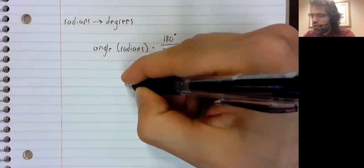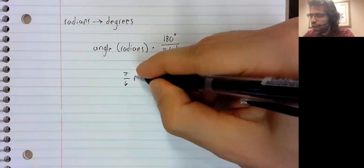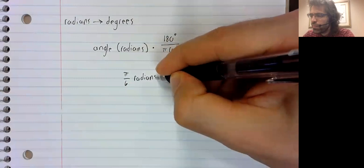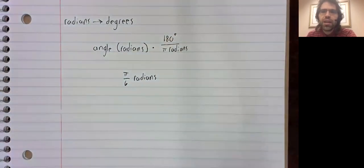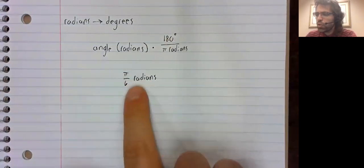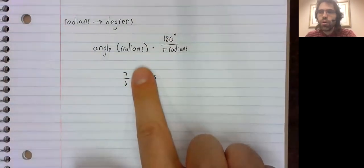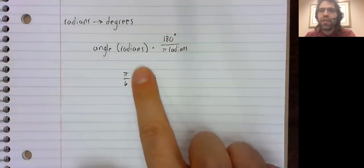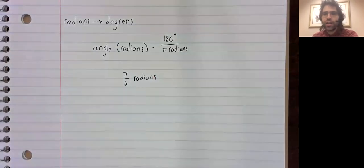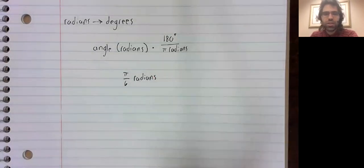So if we have pi divided by 6 radians. Once we get a little more used to radians, we won't bother writing in this word. We'll just say if we have an angle of pi divided by 6. But for now, let's just put this here.